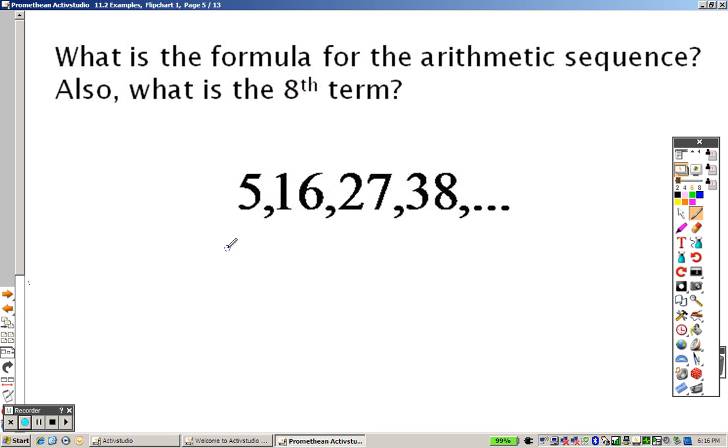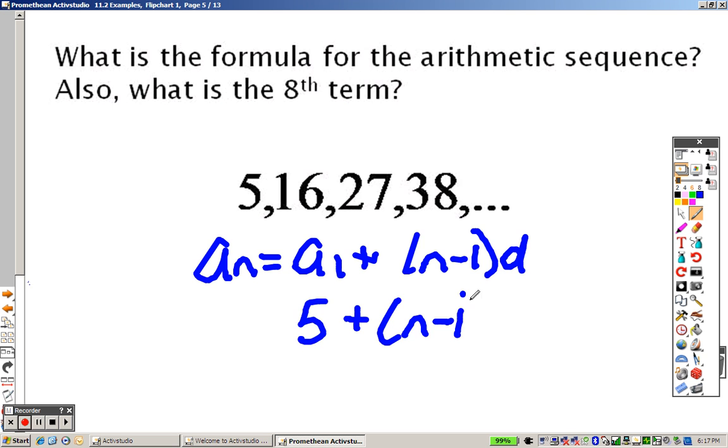With this one, same idea. A sub N equals A sub 1 plus N minus 1 times d. We start with 5. We're going up by 11 every single time here. I'm going up by 11. So I distribute that through. I get 5 plus 11N minus 11, which ends up giving me 11N when I combine my terms minus 6.